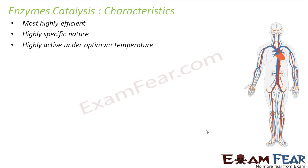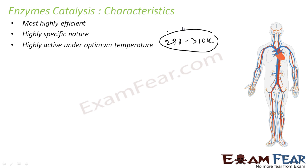They are highly active under optimum temperature. Most enzyme catalysts work in the body, and the body has an optimum temperature. At very high or very low temperatures, these enzymes don't work. They have an optimum temperature range of approximately 298 to 310 Kelvin, which is also the human body temperature.